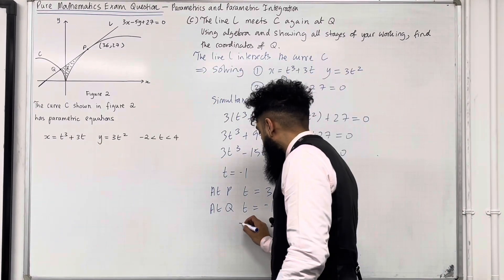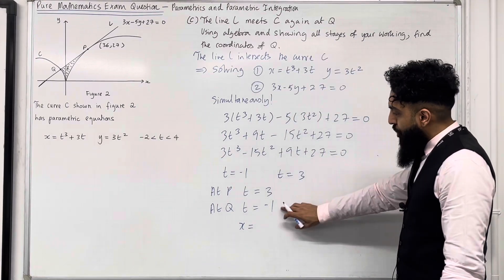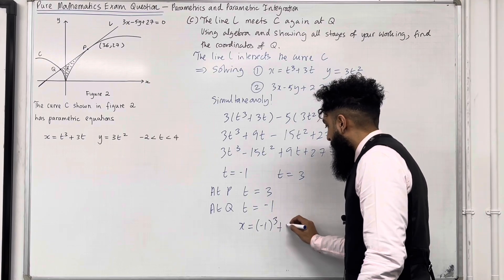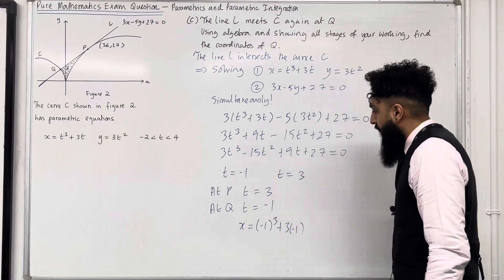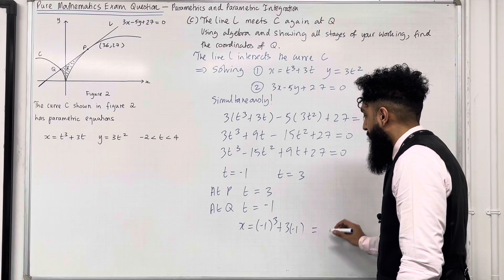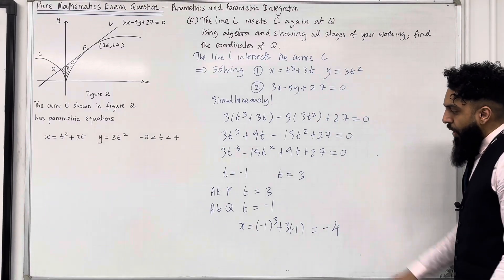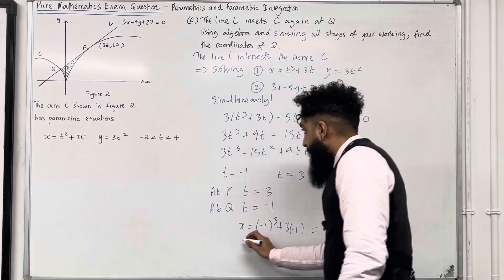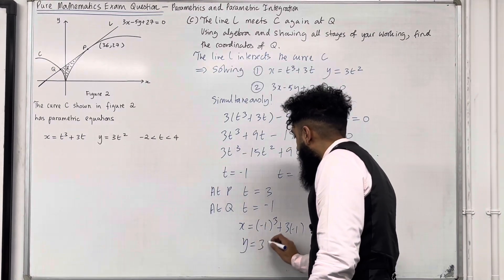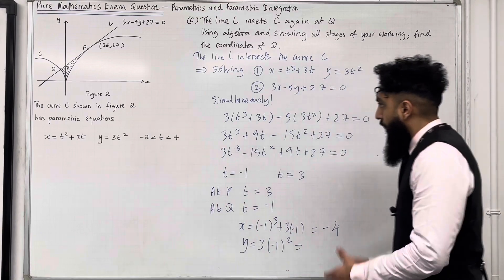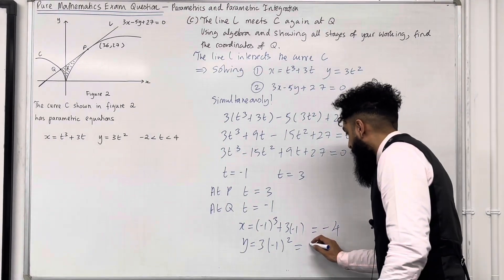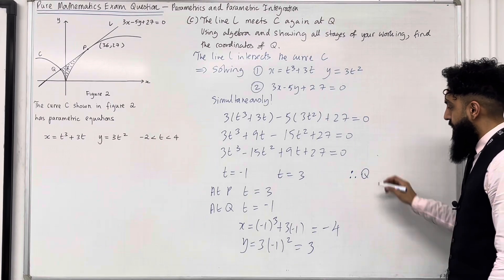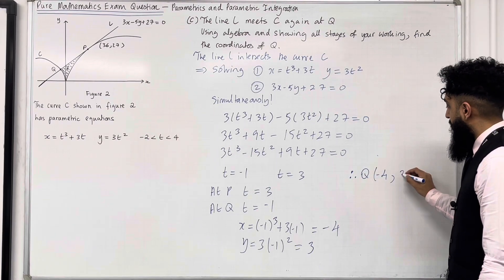Substituting t = −1 into the x parametric: x = (−1)³ + 3(−1) = −4. Substituting t = −1 into the y parametric: y = 3(−1)² = 3. Therefore, the coordinates of Q are (−4, 3).